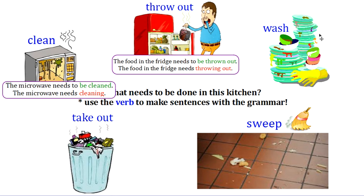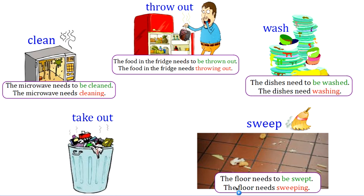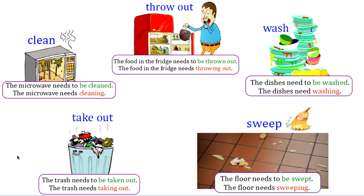For the dishes: 'the dishes need to be washed,' or 'the dishes need washing' — both are okay. For the floor, the verb is 'sweep': 'the floor needs to be swept' — and 'swept' is the past participle — or 'the floor needs sweeping,' using the gerund. And the last one, the trash, 'take out': 'the trash needs to be taken out,' and 'the trash needs taking out.'